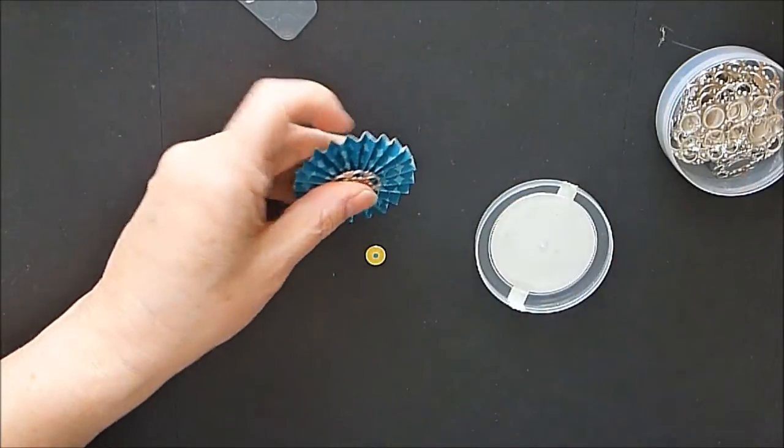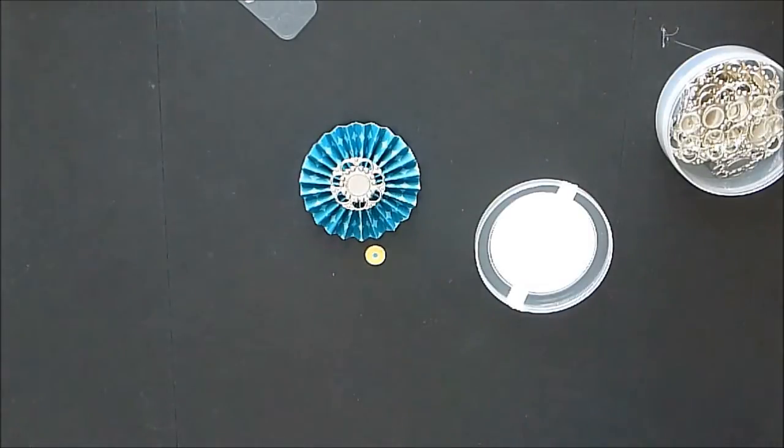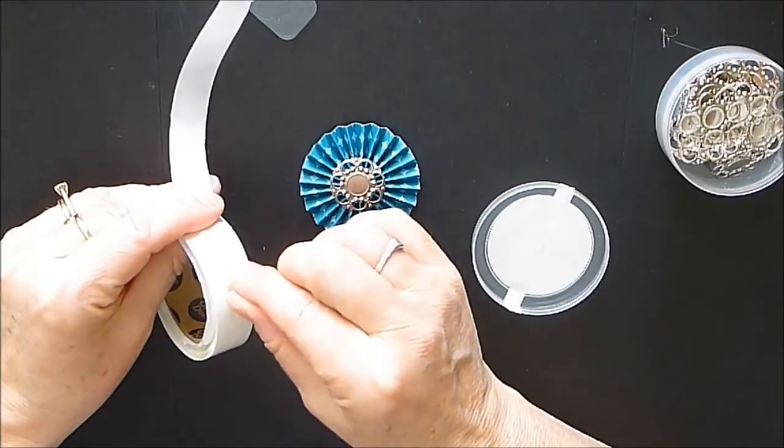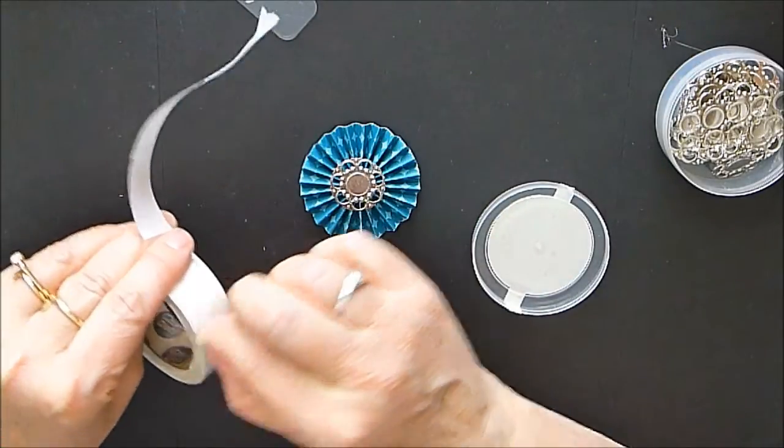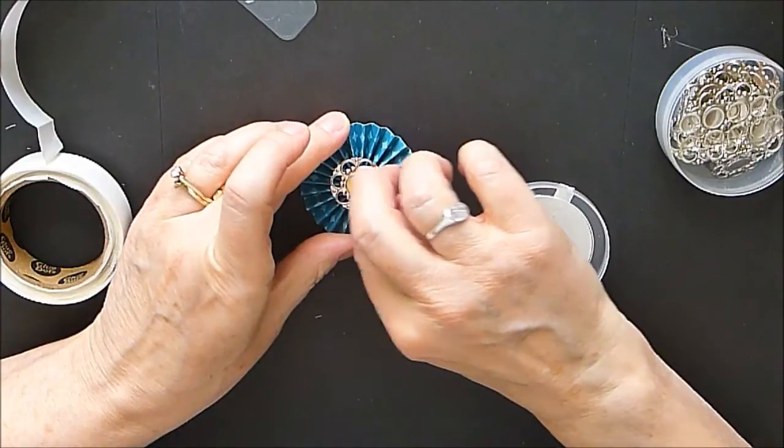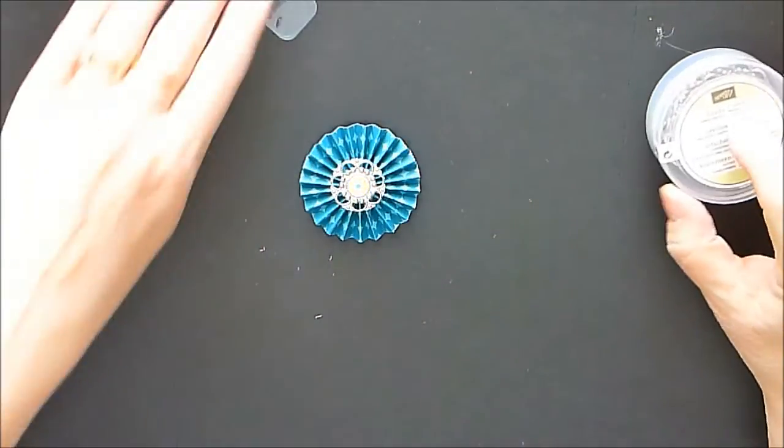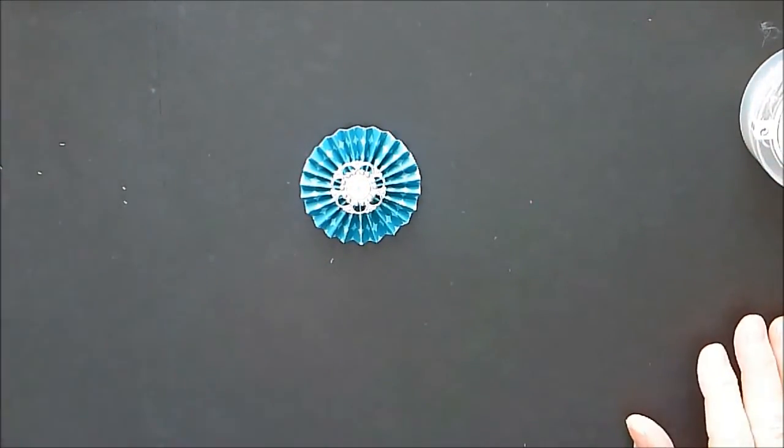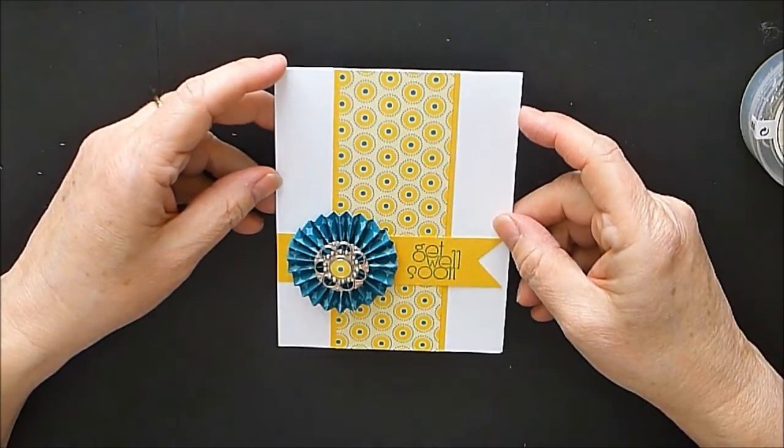I'm just gonna stick that there like that and now I do need my glue box to get my little glue dot and I'm gonna just stick that right in the center and that is as quick and easy as it gets for this week's how-to technique accordion flowers.